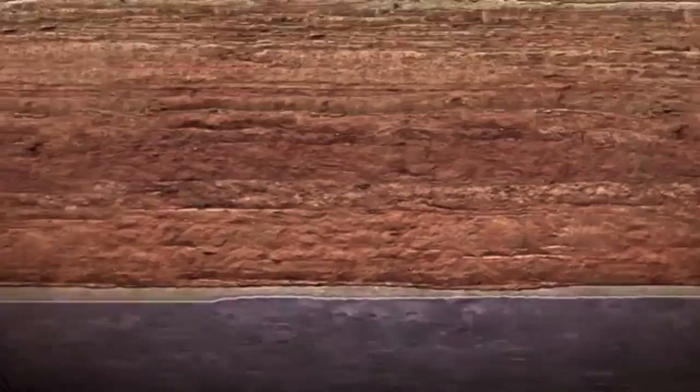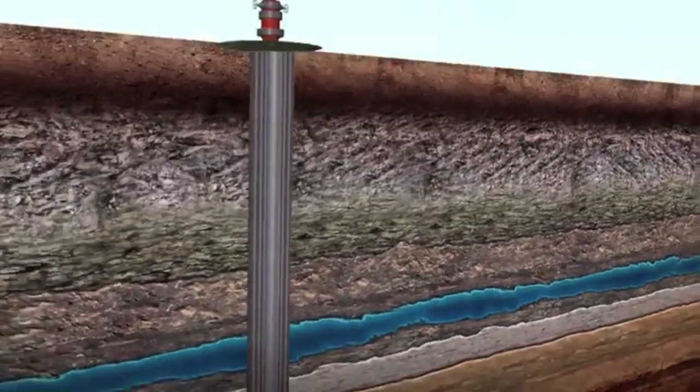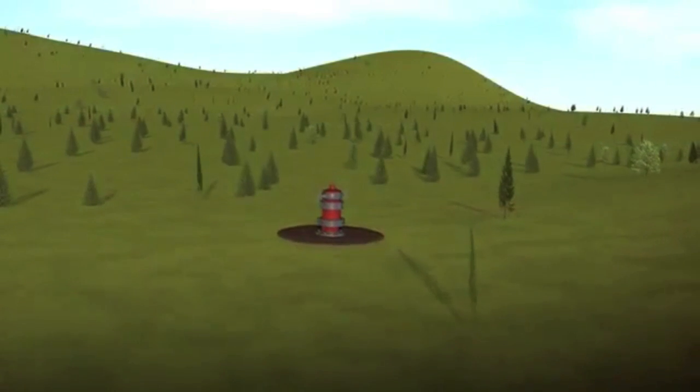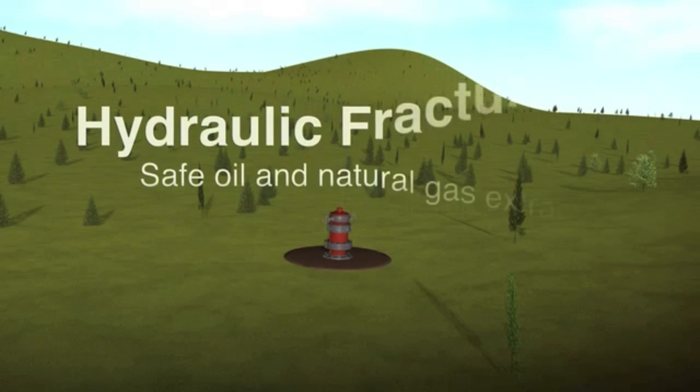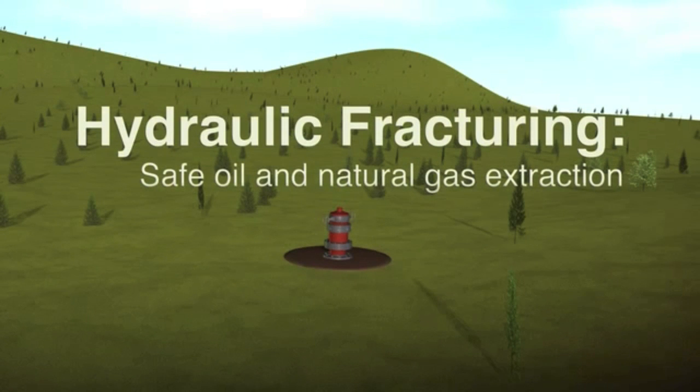The entire drilling process takes about two to three months, but hydraulic fracturing takes only days and can allow for 20 to 40 years of energy production. Combining horizontal drilling and hydraulic fracturing reduces the footprint of drilling and makes it possible to produce oil and natural gas in places where previous technologies could not.